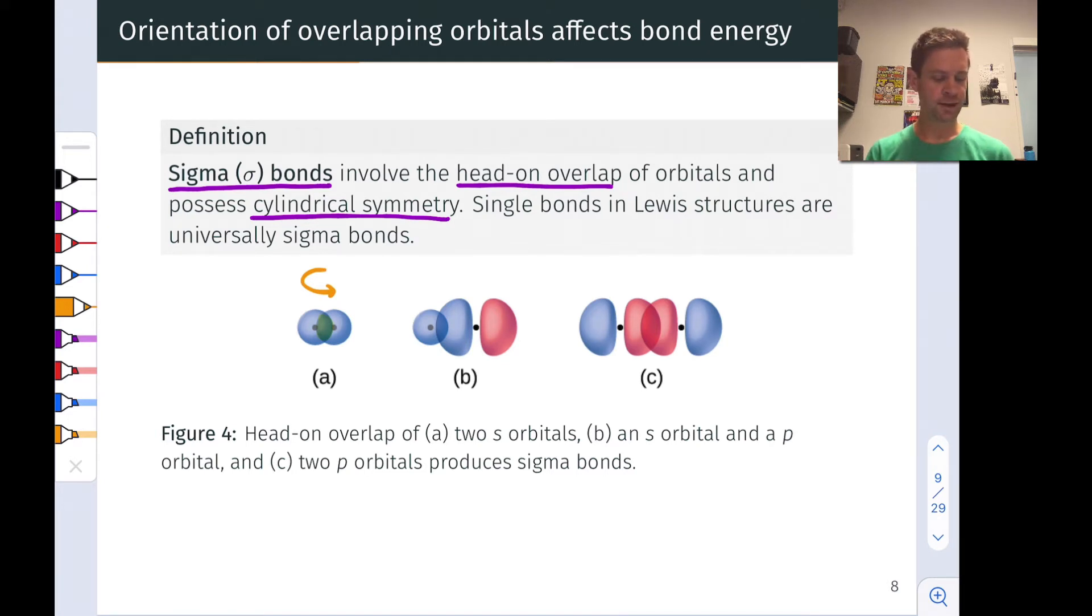A similar situation is happening in B, but we've replaced one of the S orbitals with a P orbital. So we have a region here of overlap that's still cylindrically symmetric. If I imagine rotating around like this, we will see a circle along the bonding axis.